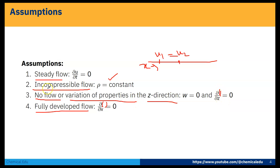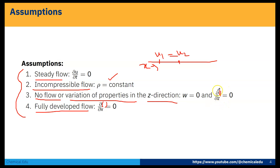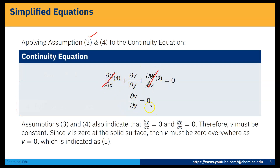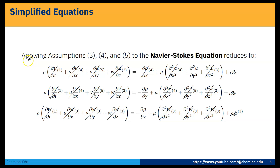Applying assumptions 3 and 4 to the continuity equation: ∂u/∂x = 0 and ∂w/∂z = 0, so ∂v/∂y = 0. Integrating gives v = constant. Since v = 0 at the solid surface, v must be zero everywhere. This is assumption 5: v = 0 everywhere.